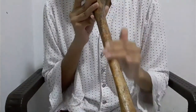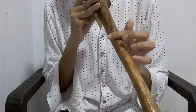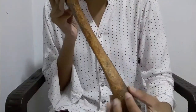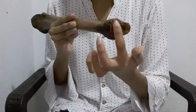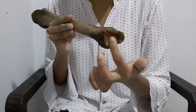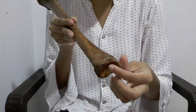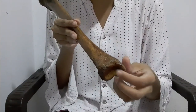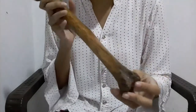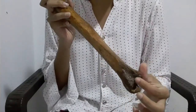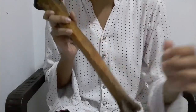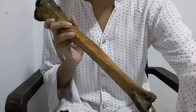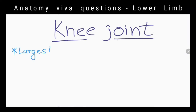This is the posterior surface; it has the soleal line. This is the distal end of the tibia — it has an articular surface for the talus. This is the medial malleolus of the tibia, and there is a depression on its lateral surface for articulation with the fibula.